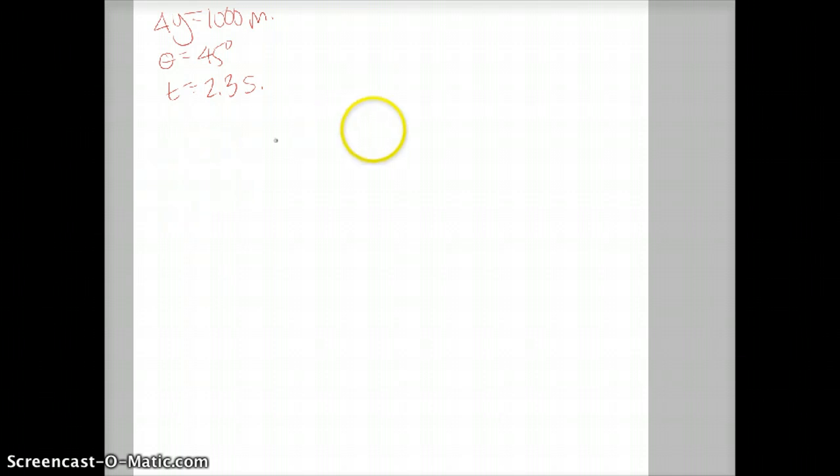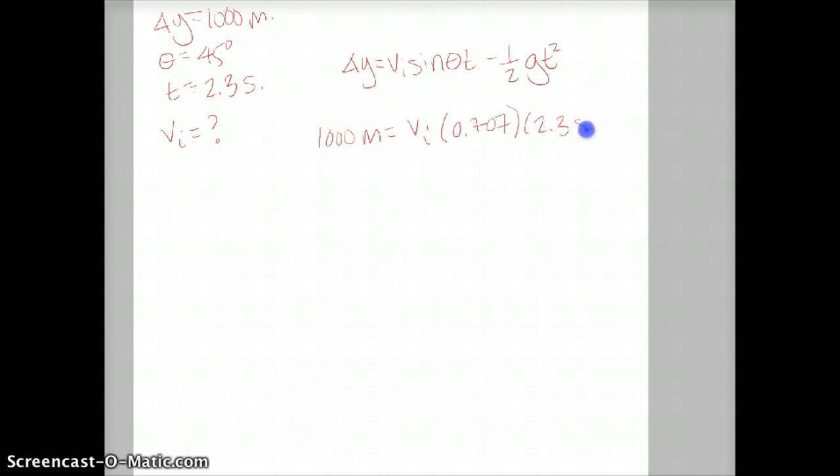Now, if we were to try to choose an equation to use to best utilize this information in order to get the initial velocity, the one that would spring to mind would be delta y is equal to vi sin theta times t minus 1/2 gt squared. So, from here on out, it's just a basic plug and chug. You've got 1,000 meters is equal to vi times sin theta is going to be 0.707 or root 2 over 2. t is 2.3 seconds minus 1/2 times 9.8 meters per second squared times 2.3 seconds squared.